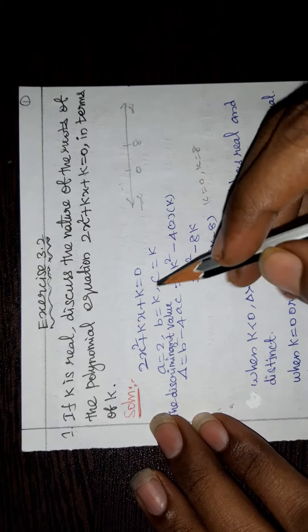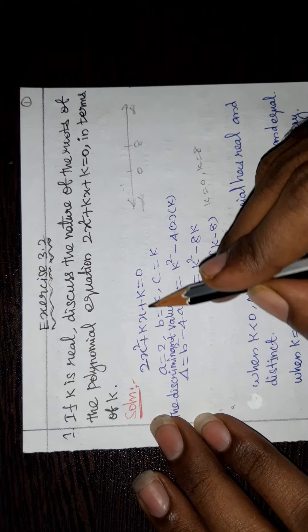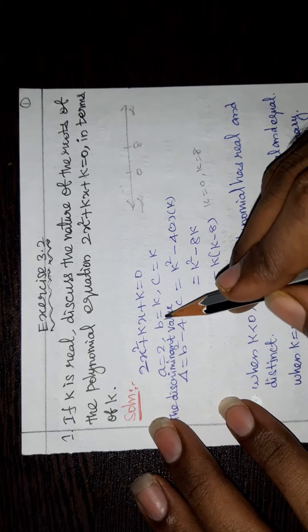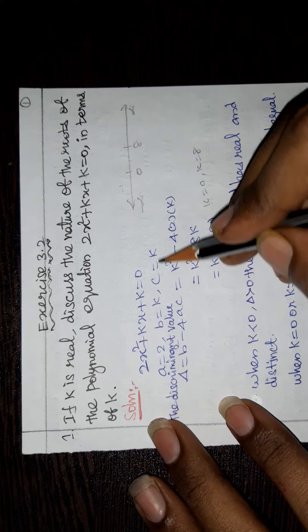Solution. The given polynomial 2x² + kx + k = 0. a = 2, b = k, c = k.